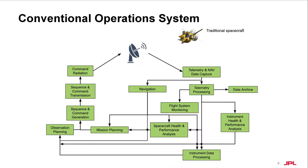To give you an idea about the scope of this project, in this picture you see the conventional operations workflow. On the right-hand side, the downlink: we get telemetry data and we do processing of that data. We evaluate the flight system instrument health to understand what is the state of the spacecraft. And on the left-hand side, you see the uplink process in which, from a set of target observations, we have to define a sequence of commands to be uploaded to the spacecraft.